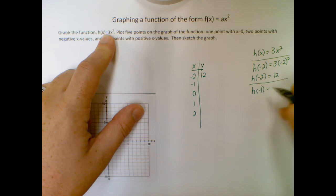If I do negative one then I will have three times negative one squared which comes out to three times, and this is negative one squared is positive one, so three times one is a three.